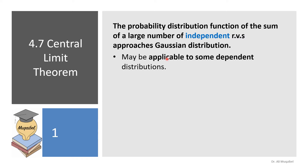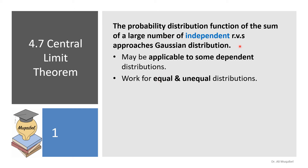That's fantastic because it may be applicable even to some dependent distributions — even if they are dependent, you will still get Gaussian. It also works for equal or unequal distributions. If you add Poisson, exponential, or uniform, this theorem tells you that no matter what you add, if you're looking for the sum, you're going to end up with Gaussian — unless there is some strong dependence between them. It works whether they are dependent or independent, equal or unequal, and it also works for continuous distributions.